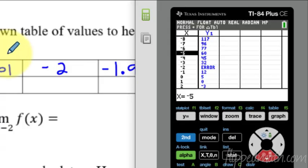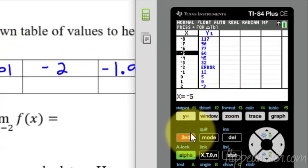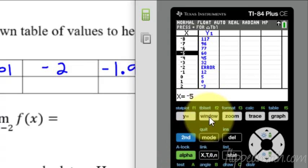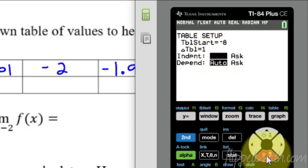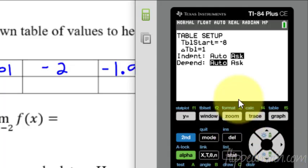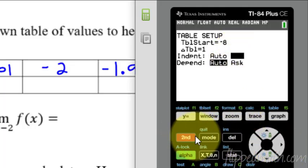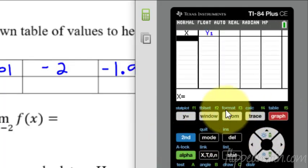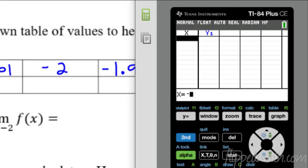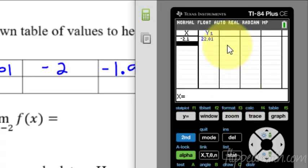But we want to have these exact values. The way you do that is you go to table setup, and that's in blue. Table setup is in blue for this window button. You have to hit the second blue button first, and then the table setup. We want this independent is our x's. Instead of it being on auto, we're going to shift it over to ask. That's all you have to change. Now when you go back to second and then the table here above the graph button, now it lets us plug in anything we want. Negative 2.1, hit enter, and voila, the y value appears, 22.01.